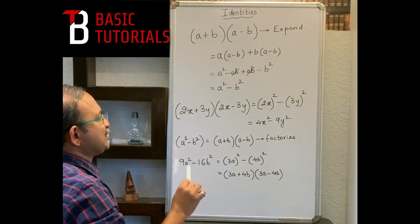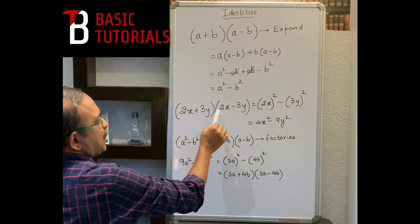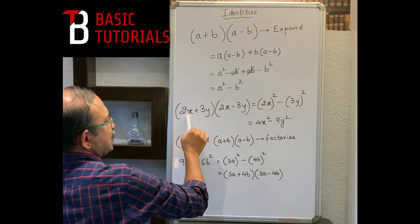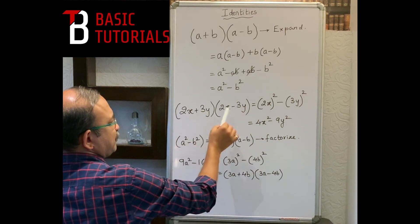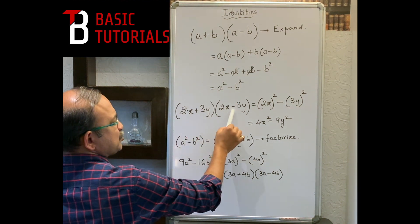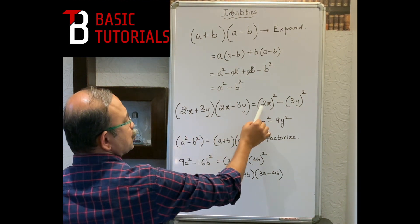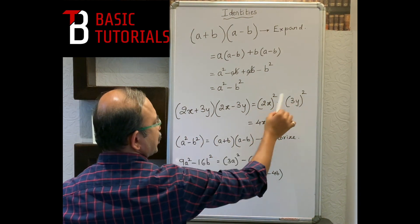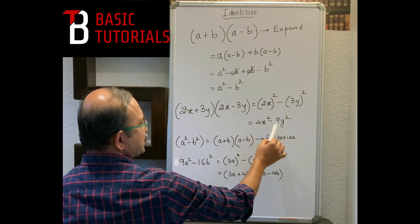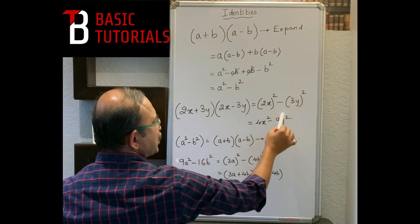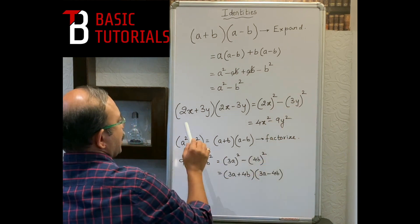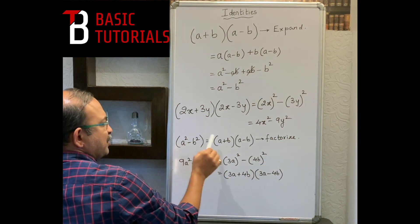Example: (2x + 3y)(2x - 3y). Here 2x is a and 3y is b — the only difference is the sign. Using a² - b²: (2x)² - (3y)² = 4x² - 9y².